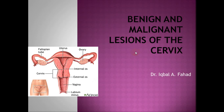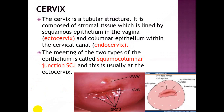Our topic is about benign and malignant lesions of the cervix. The cervix is a tubular structure composed of stromal tissue lined by squamous epithelium in the vagina and columnar epithelium within the cervical canal — the endocervix. The meeting of the two types of epithelium is called the squamocolumnar junction, which is usually at the ectocervix.